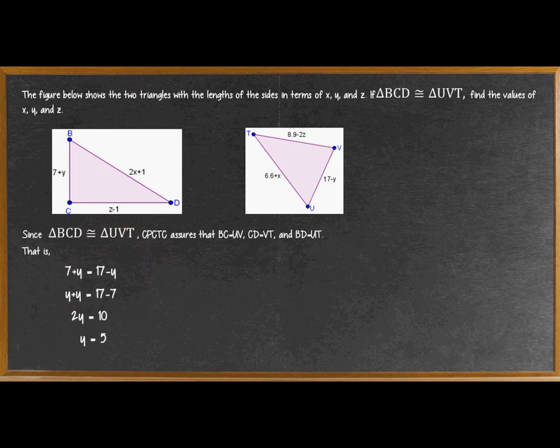Since triangle BCD is congruent to triangle UVT, CPCTC assures that BC equals UV, CD equals VT, and BD equals UT. That is, 7 plus Y, which is BC, is equal to 17 minus Y, which is UV.